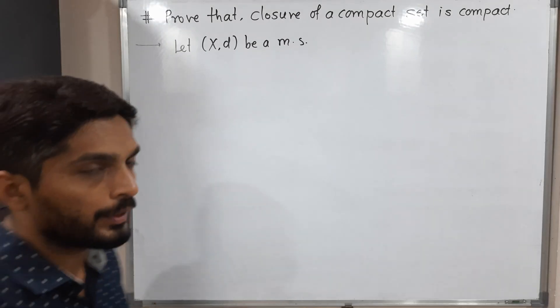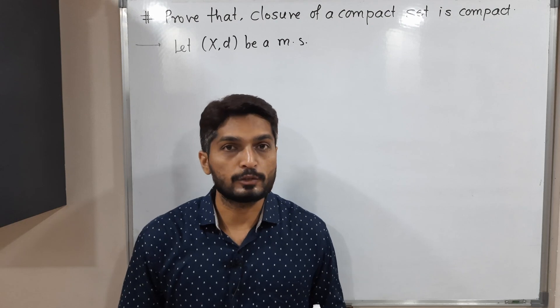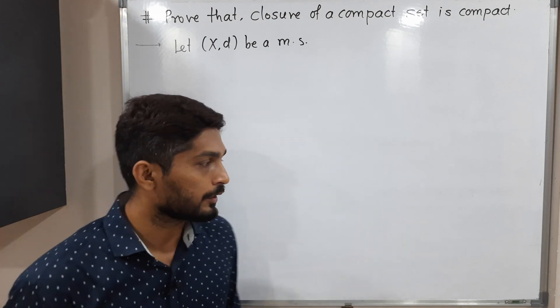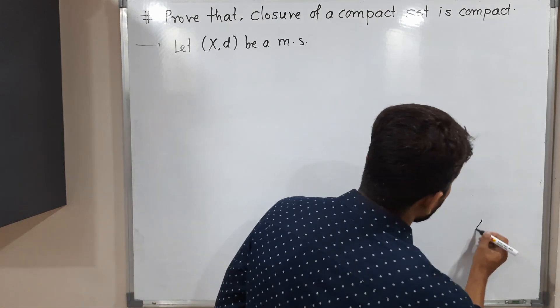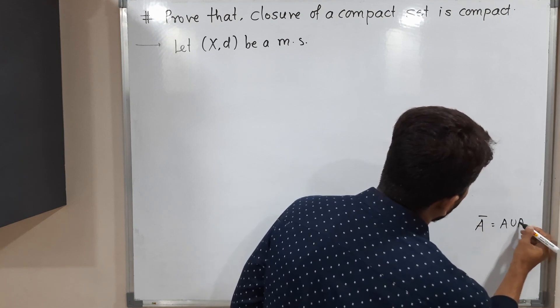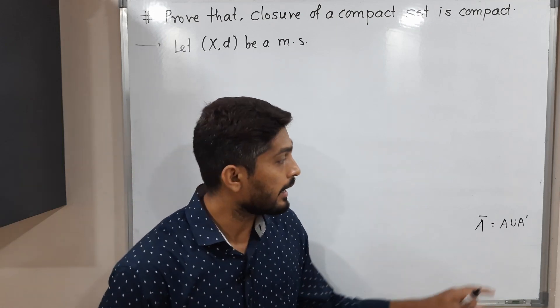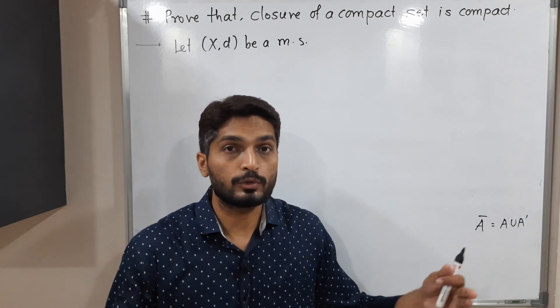Hi everyone, in this video we are going to prove this statement: that the closure of any compact set is compact. Let us recall what closure means. It is defined as A bar equals A union A prime, where A bar denotes the set and the set of its limit points.